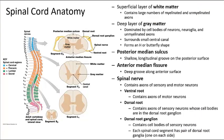Other parts of the spinal cord include the posterior median sulcus, a shallow longitudinal groove on the dorsal surface; the anterior median fissure, a deep groove along the ventral surface; and the central canal, a longitudinal passageway extending the length of the spinal cord that contains cerebrospinal fluid. The gray matter, dominated by neuronal cell bodies, neural glia, and unmyelinated axons, surrounds the central canal and forms a butterfly shape.